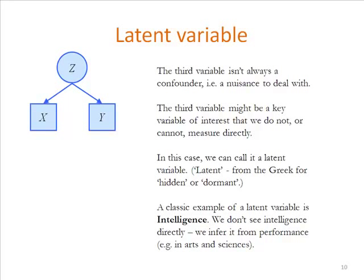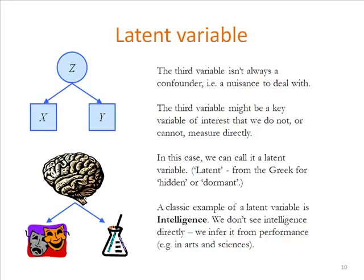A classic example — probably the classic example — of this type of variable is intelligence. Here, your brain representing intelligence is this hidden variable you can't get at directly. But what you can do is look at how people perform in tests that you believe require intelligence, things like arts and sciences. You can see that performance tends to be correlated — people who tend to be good at one tend to be quite good at the other. The idea is that we can measure things people do and assume there's some trait we haven't measured directly — in this case, intelligence.